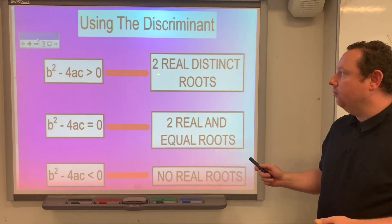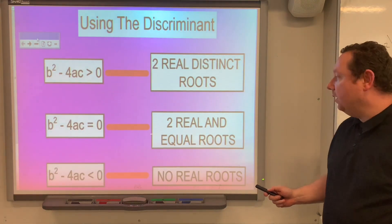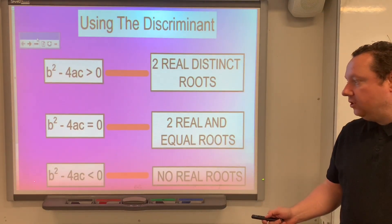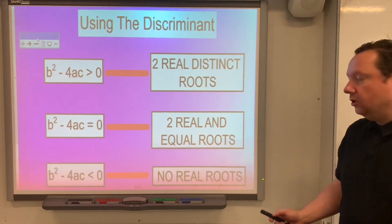Now if it's bigger than zero, that means we've got two real distinct roots. If b squared minus 4ac equals zero, then we have two real but equal roots. And if b squared minus 4ac is less than zero, we get something we cannot square root, so there must be no real roots.